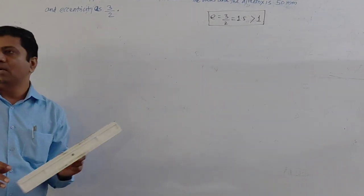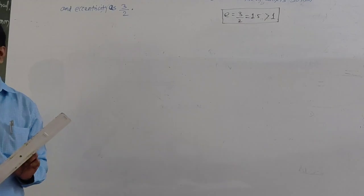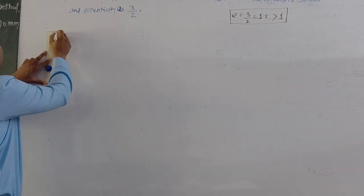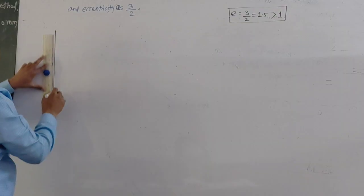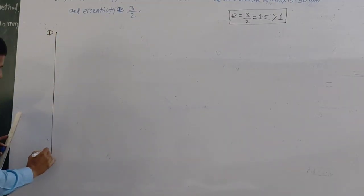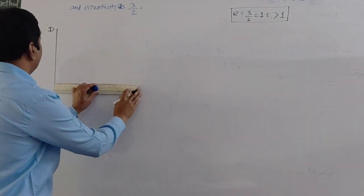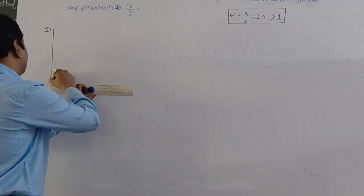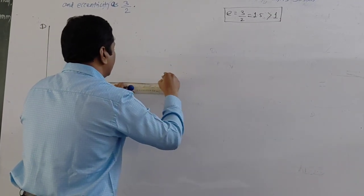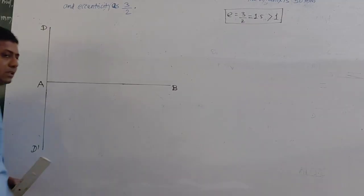We will draw the hyperbola by the directrix-focus method, also called the eccentricity method. First, we have to draw a vertical line — that line is your directrix, of any length. Mark this line as DD'. Then draw a horizontal line — this line is AB and is called the principal axis.